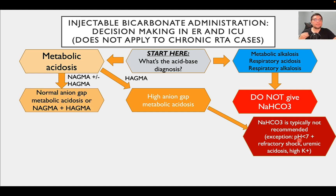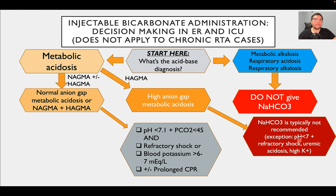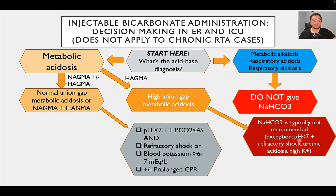If your patient has normal anion gap metabolic acidosis, or a combination of normal and high anion gap metabolic acidosis, look for the following criteria: pH less than 7.1, and partial pressure of CO2 that is also low — because bicarbonate administration may increase CO2, so if CO2 is already high in a mixed disorder, you don't want to use bicarb. CO2 should be at least less than 45. If that's met and the patient is in refractory shock not responsive to vasopressors, or has blood potassium greater than 6 or 7 — hyperkalemic even without shock — you may consider bicarbonate administration.